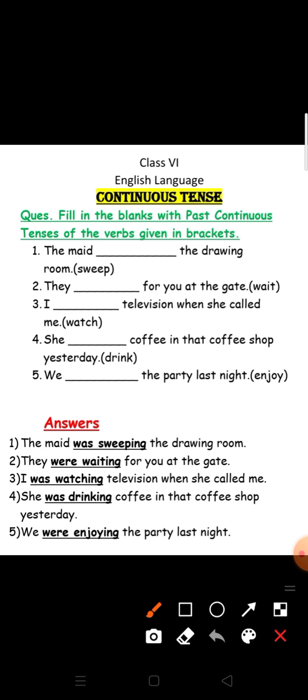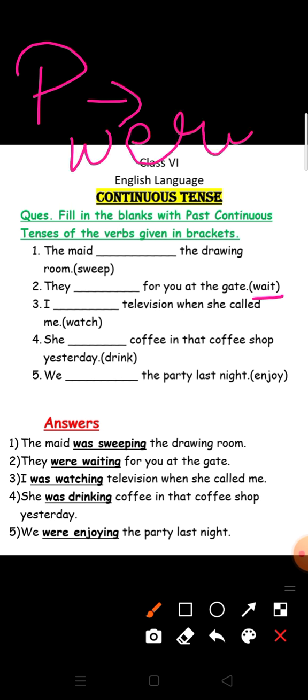Second sentence: they dash for you at the gate. Word is wait. Here the subject is 'they', which is plural, so we will use 'were' and the ing form of wait, that is 'waiting'. So the sentence will become: they were waiting for you at the gate.